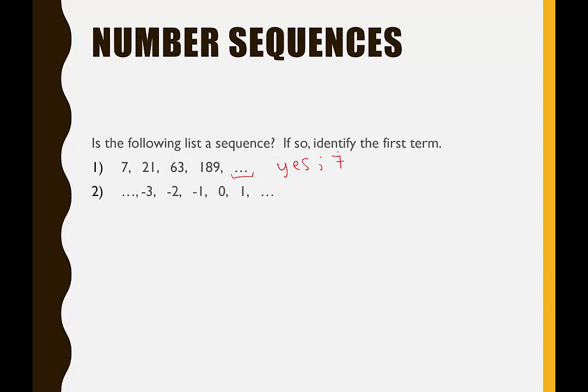Next we have dot dot dot, negative 3, negative 2, negative 1, 0, 1, dot dot dot. Okay, is this list a sequence? For it to be a sequence it has a defined first term and no last term. This indicates that this pattern is repeating before we ever get to negative 3. So no, this list is not a sequence.